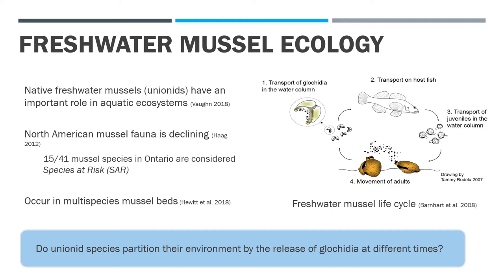Unionids often live in multi-species mussel beds, where host fishes may be shared among unionid species. This leads to the research question: do unionid species partition their environment by the release of glochidia at different times? Given the high diversity of unionids at a site and the limited number of host fish, we hypothesize that unionids release their glochidia at different times to partition their hosts and to minimize potential competition.